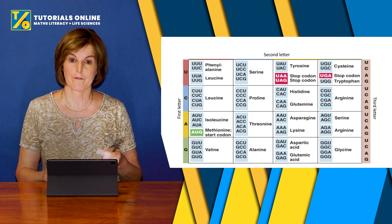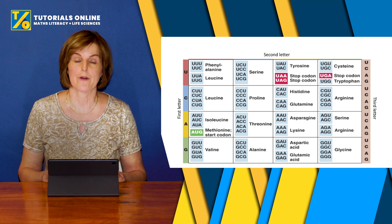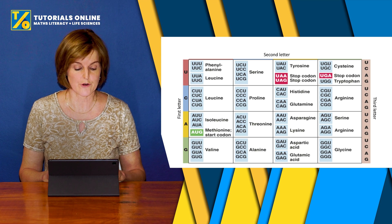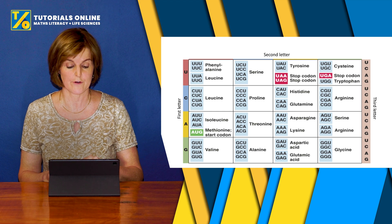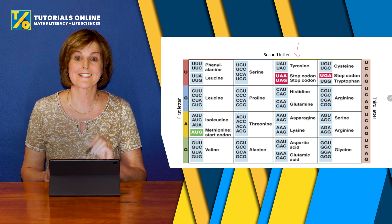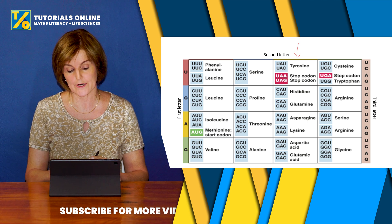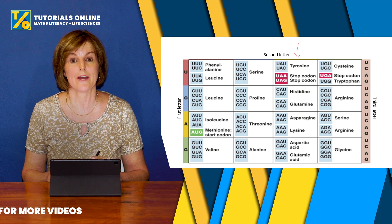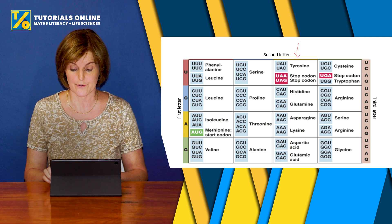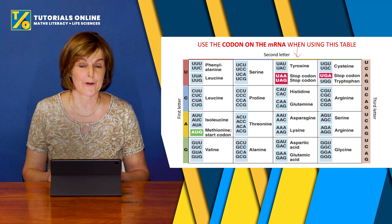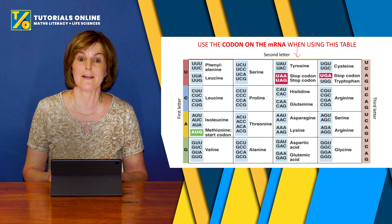The first letter of the codon — let's say it's CAA — you start in the blue row where the first letter on the left is C, then go across until you find CAA. The second letter is A, and in the third column you can see all the second letters are A. The last letter is also A, and that gives you glutamine as the amino acid. Remember: you must use the codon on the mRNA when using this table — that's where a lot of people make mistakes.